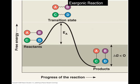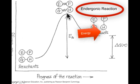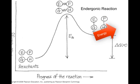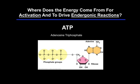That energy released by the exergonic reaction can be used in an endergonic reaction. In the endergonic diagram, a constant input of energy is necessary to reach the transition state where bonds between elements can exchange, and at the end the products have more energy than the reactants did. So where does the energy come from for activation of exergonic reactions and to drive endergonic reactions? It comes from a molecule called ATP, otherwise known as adenosine triphosphate.